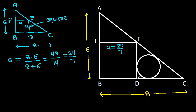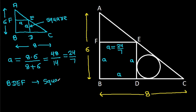And ED will be A, BD will be A, and FB will be A. Also, BDEF is a square, so these angles will be 90 degrees.